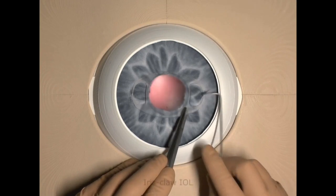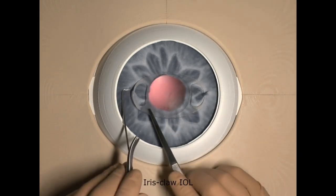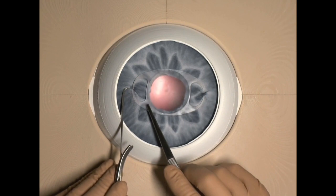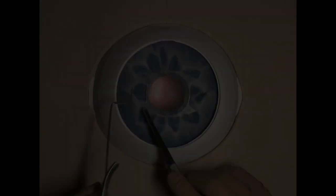Iris claw lenses can be fixated on iris inside anterior or posterior chamber. You have to remember to use different A constant for calculation.